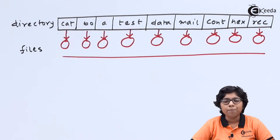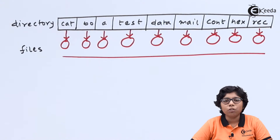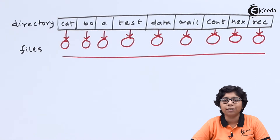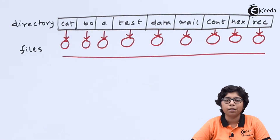The UFD is referred to for a particular file entered in that user's process, and when a user is running on the system, the MFD is searched for that particular UFD. Any file name can be duplicated across different users' UFDs. For example, user1 can have a file data.c and user2 can also have a file data.c, as each UFD is searched independently. When creating or deleting a file entry in a UFD, the OS checks only within that user's UFD.